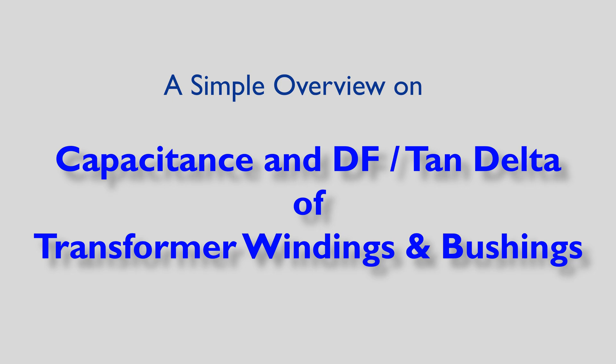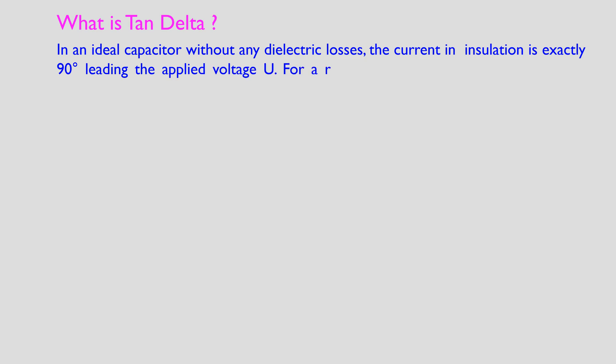What is tan delta? In an ideal capacitor without any dielectric losses, the current in insulation is exactly 90 degrees leading the applied voltage U. For a real insulation with dielectric losses, this angle is less than 90 degrees. Then angle delta is equal to 90 degrees minus phi.